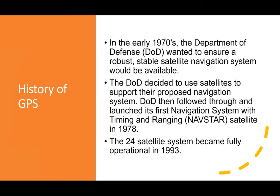In the early 70s, the Department of Defense wanted to ensure a robust, stable satellite navigation system. The DoD decided to use satellites to support their proposed navigation system, and launched its first Navigation System with Timing and Ranging, known as NavStar, in 1978. The 24-satellite system became fully operational in 1993. In the context of 2021, this is technology that developed really fast, and I expect the evolution of data and systems will keep going.